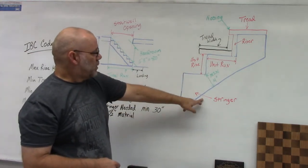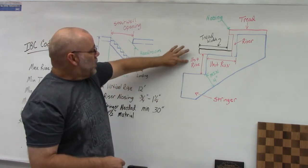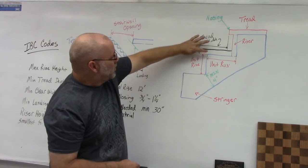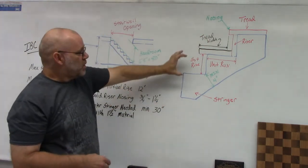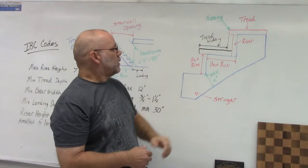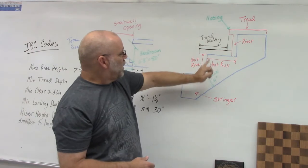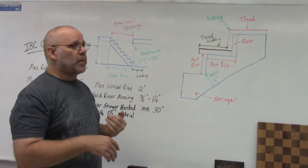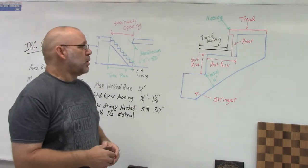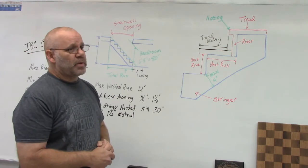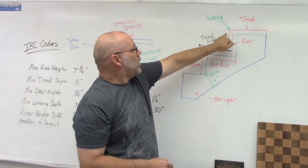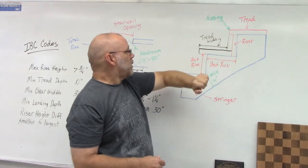A stringer is the board that's cut out to make up the supports on your staircase. The unit rise is the height from the bottom of one tread cutout to the top of the next — when you do your calculations, you're figuring out the unit rise, which is usually around seven inches. The unit run is the distance of each tread cut, typically 10, 10.5, or 11 inches or more, determined by whoever is drawing the plans.